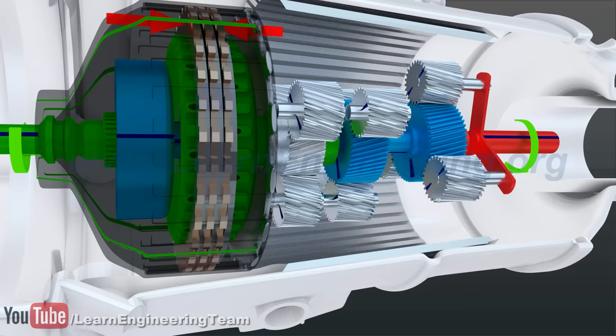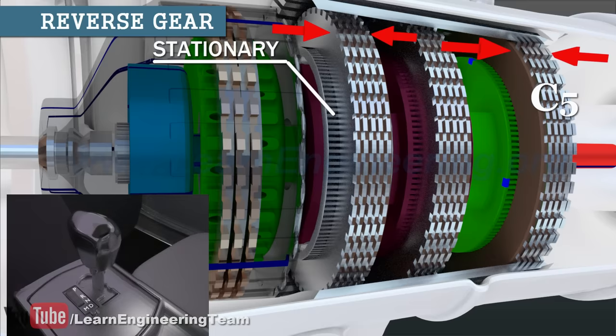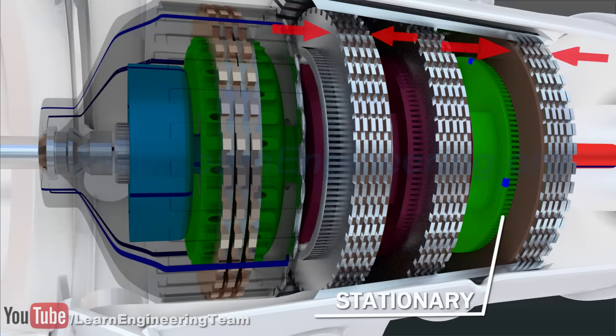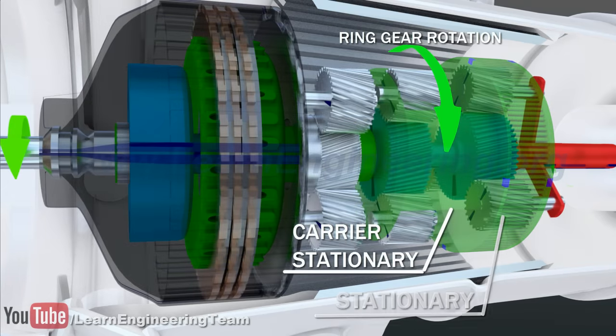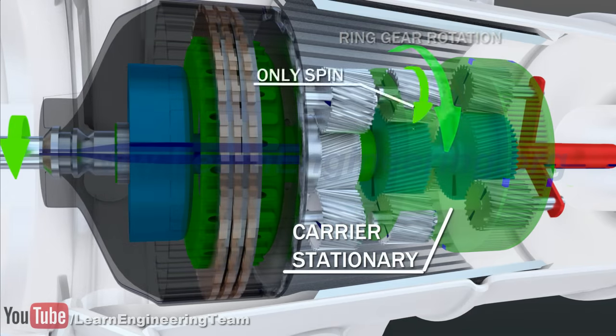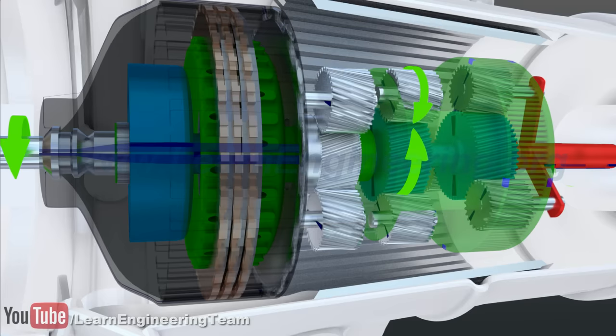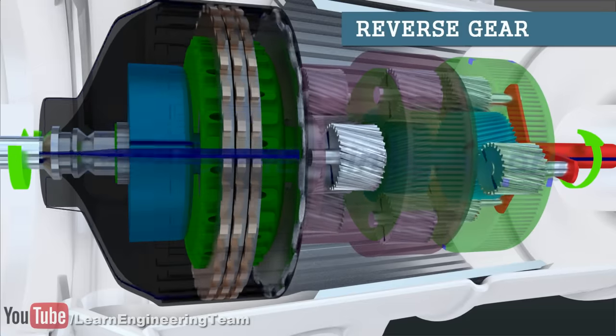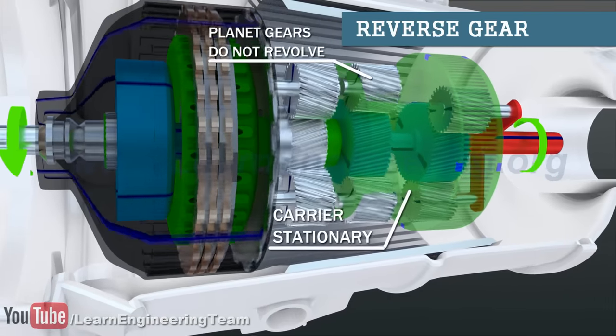In order to go in reverse, apply the ring gear clutch C5 as well. Since the planet gears of the second set cannot revolve, they will spin as shown here. This will eventually lead to the reverse rotation of the sun gear. Consequently, the final output will be a rotation in the opposite direction. A transmission control unit will decide when to apply which clutch pack.